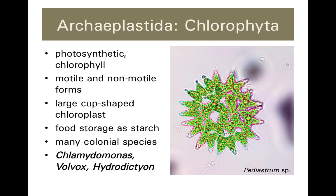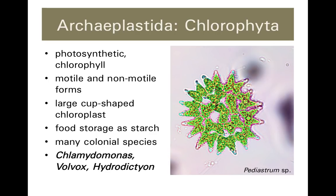Also in the Archaeplastida, we've got the Chlorophyta — our green algae. Chloro, like chlorophyll found in chloroplasts, which make green plants green. Within the Chlorophyta, we find a lot of diversity: single-celled forms, colonial forms, and a few multicellular forms. Some are motile by means of flagella, some are non-motile, but they do — like plants — store food as starch, a polysaccharide found in plants and green algae, which hints at shared common ancestry confirmed by DNA evidence.